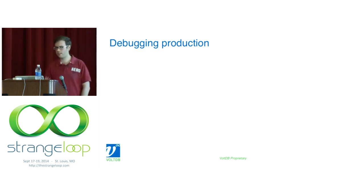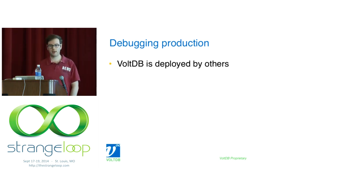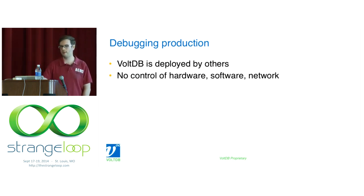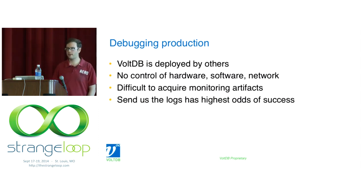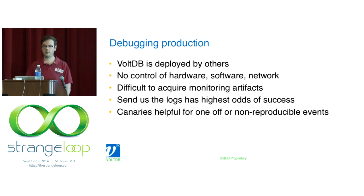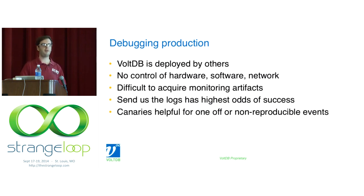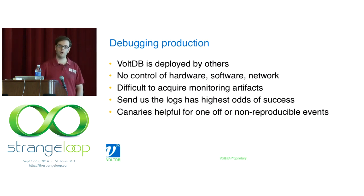All of these tools matter because we're debugging in production deployed by other people — we don't control the hardware, software, or network. It's difficult to acquire monitoring artifacts; we typically get screenshots but not raw data. Canaries are really helpful: if someone reports a problem and you have no visibility, but the database says 'that disk didn't respond for 20 milliseconds,' you can explain the latency spike. Then they might say, 'Oh, I was SCPing a file at that time.'